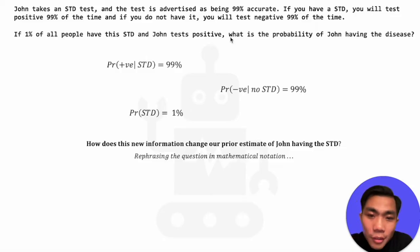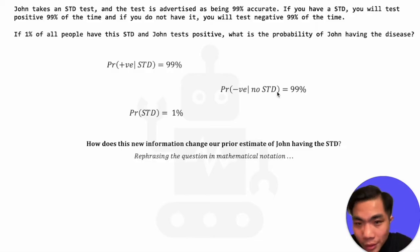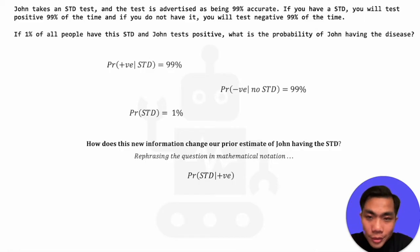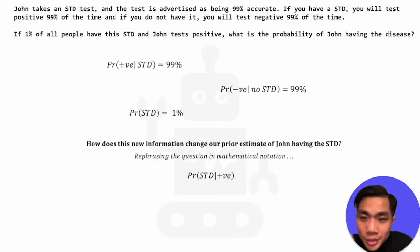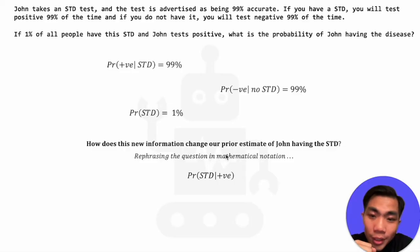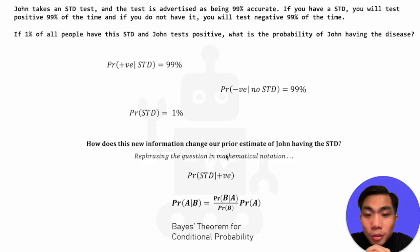So how does this new information change our estimate of John having the STD? Rephrasing in more mathematical notation, it is the probability of John having the STD given that he tested positive. This is now our posterior. We have a prior — the probability of having the STD at 1% — and now we want to calculate the posterior. This is simply a test of Bayes' theorem, which is Bayes' theorem for conditional probability.